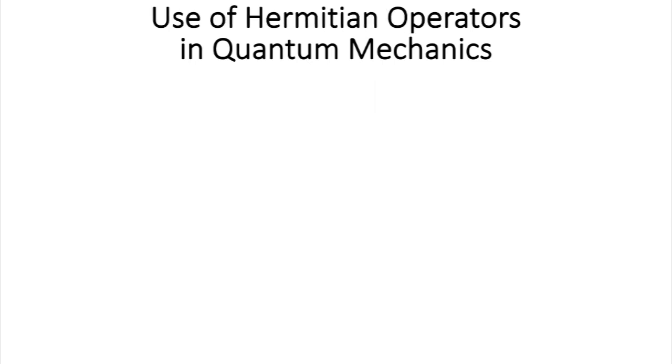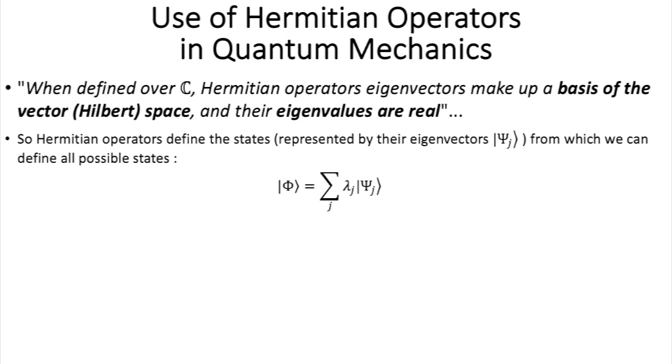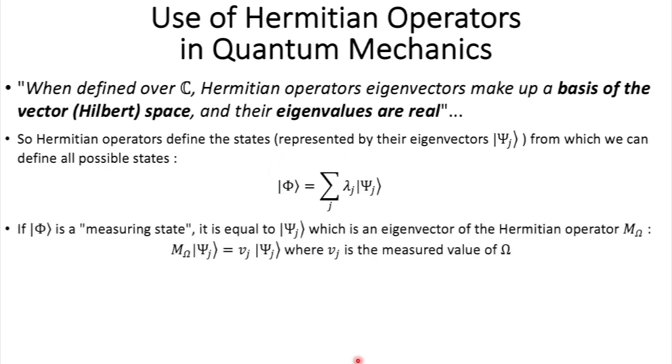What this theorem says is this. When defined over C, like in the Hilbert spaces we're talking about, well, the Hermitian operators' eigenvectors make up a basis of vector space. Plus, their eigenvalues are real. Hmm, how's that? That's quite interesting. So, Hermitian operators define the states which are presented by their eigenvectors, psi j from which we can define all possible states, just like that, which is exactly what we wanted.